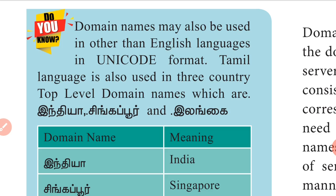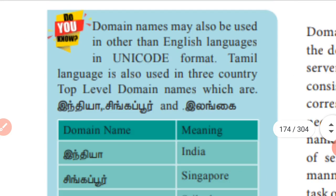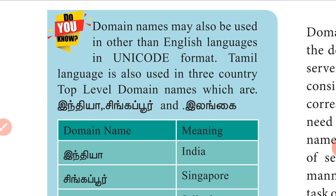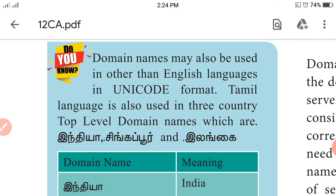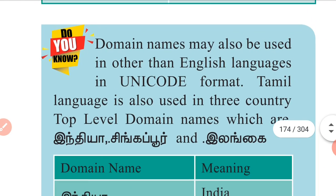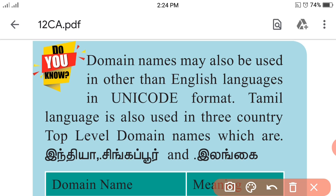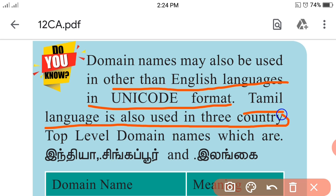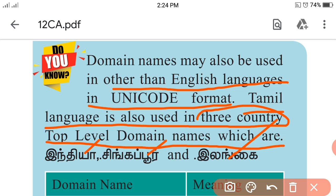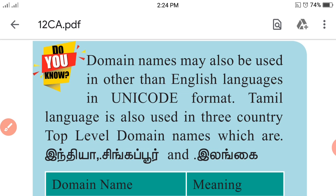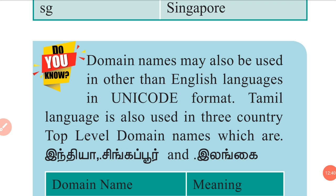Domain names may also be used in languages other than English in Unicode format. For example, Tamil language is also used for country top-level domain names in India, Singapore, and Sri Lanka. This makes it possible for local users to create domain names in their own language.